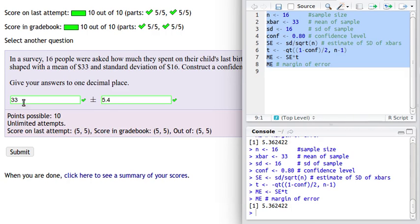So if we take that mean of 33, plus or minus 5.4, minus will give us the lower bound of the confidence interval, and plus will give us the upper bound of the confidence interval. Okay, that's it. Thank you.